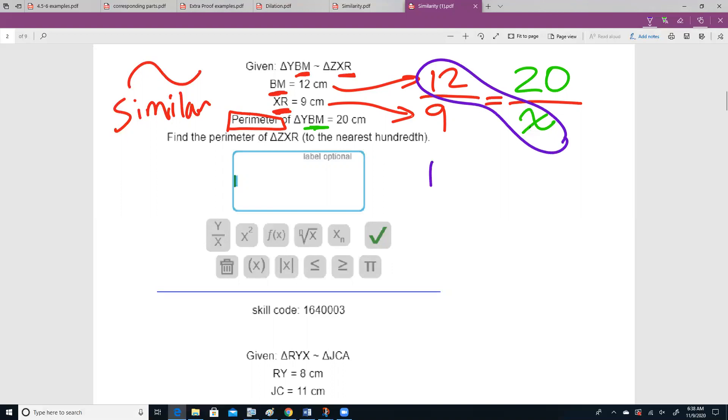12 times x is going to be 12x. 9 times 20 is 180, and then we need to divide by 12 on each side. And x is going to be equal to 15.